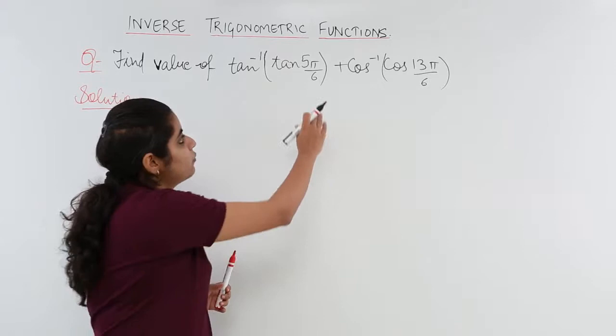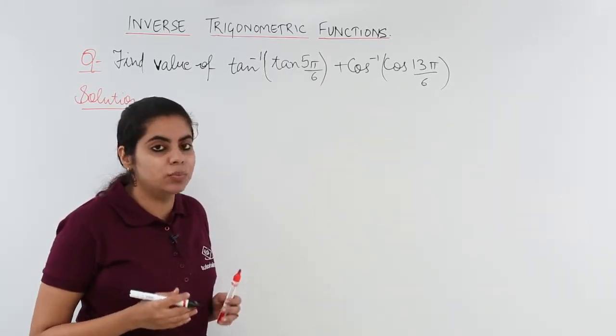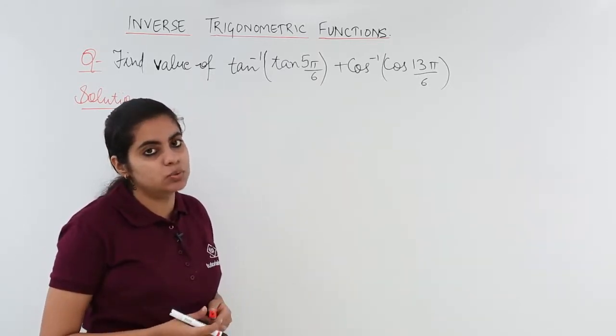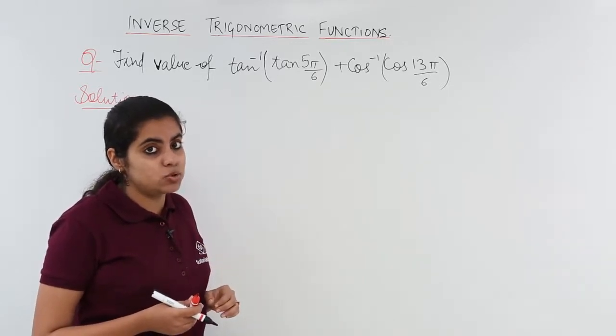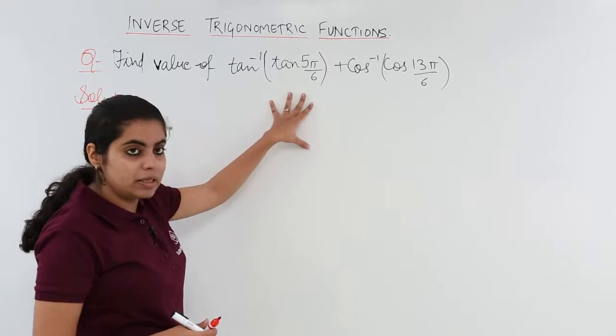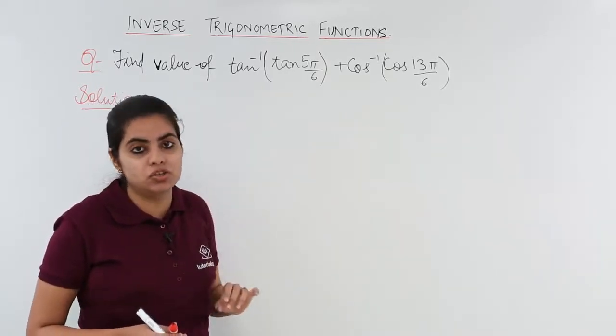Tan inverse tan 5π by 6. I know one thing that the principal value branch of tan inverse is from minus π by 2 to π by 2. Does 5π by 6 lie in minus π by 2 to π by 2? No, not at all. So I need to do something in order to make this 5π by 6 lie in the range.